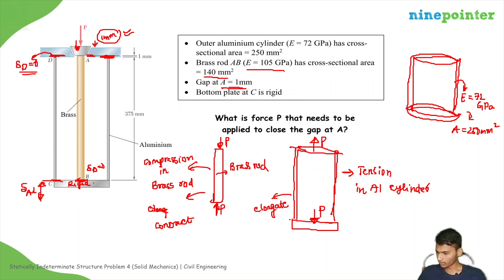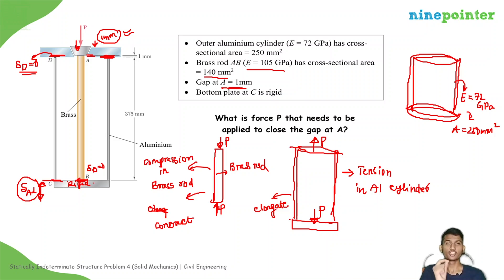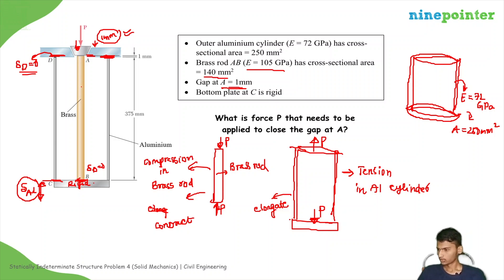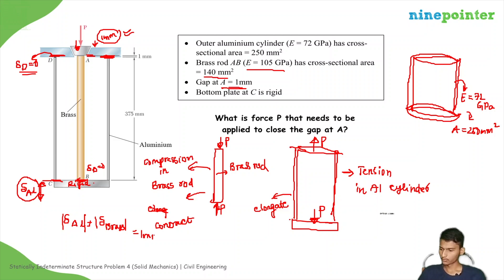So effectively, the elongation of the aluminum rod (Del_AL) plus the contraction of the brass rod (Del_Brass) should equal 1 mm. The tension in the aluminum cylinder — if it elongates and comes down — plus whatever compression is created in the brass rod — those two values added together should equal 1 mm.